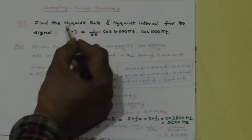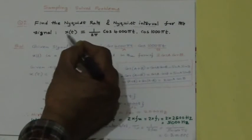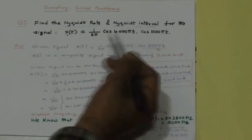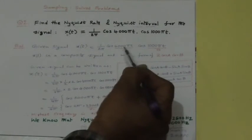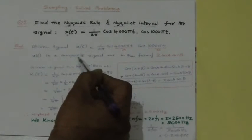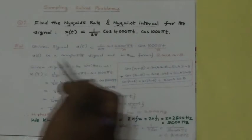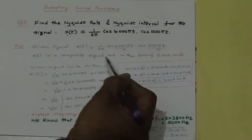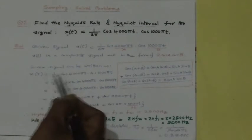In this second example we are asked to find the Nyquist rate and Nyquist interval for the given signal x(t). The given signal x(t) is in the form of 2cosA cosB. It is also a composite signal consisting of two frequencies.